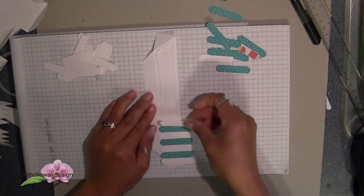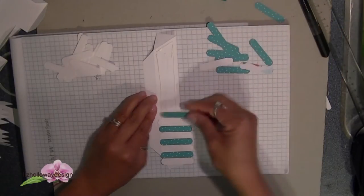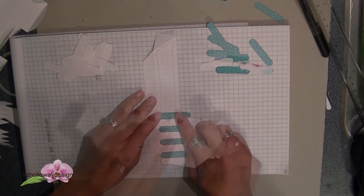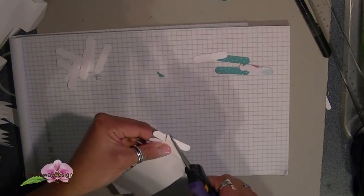Continue to alternate the pieces until you get to the end and then make sure that you check your work. Now what I have done was once the awning is dry and ready I'm ready to proceed to the next step.